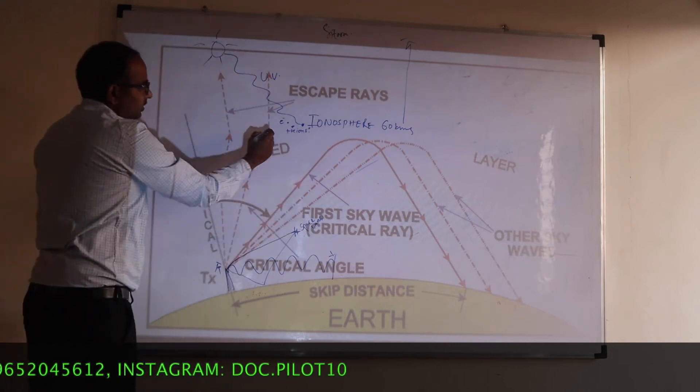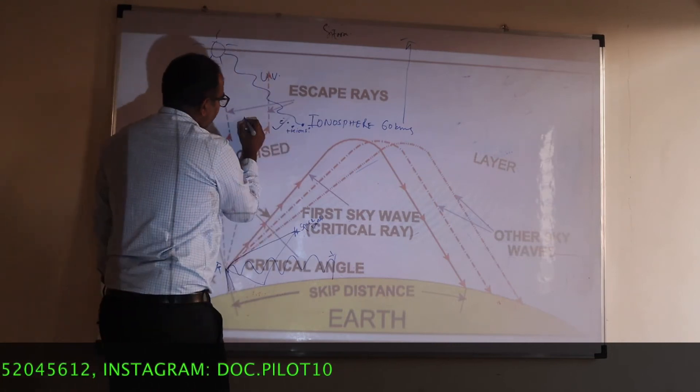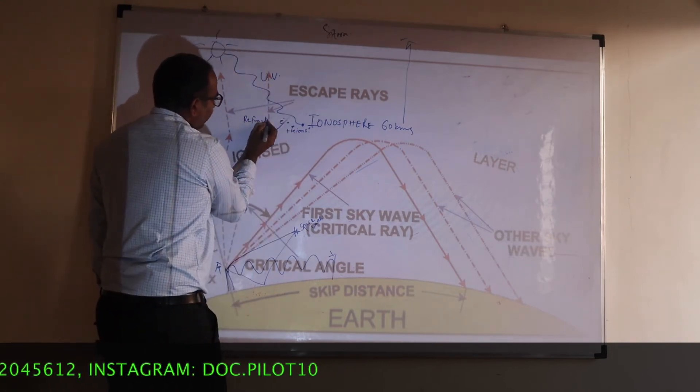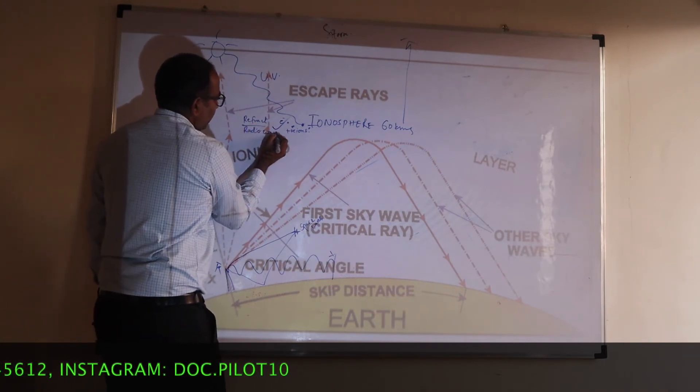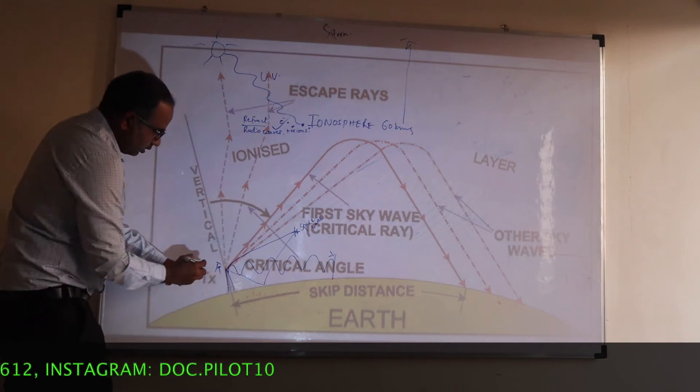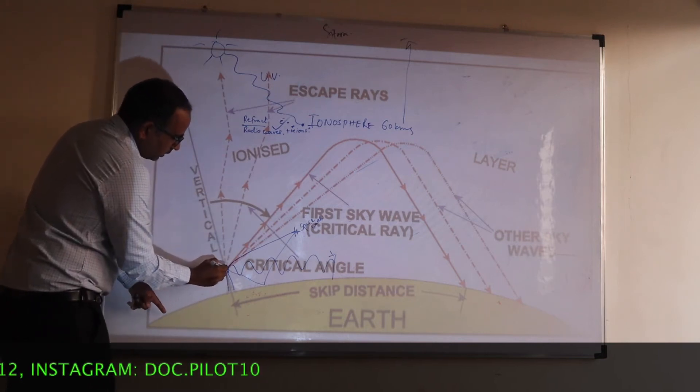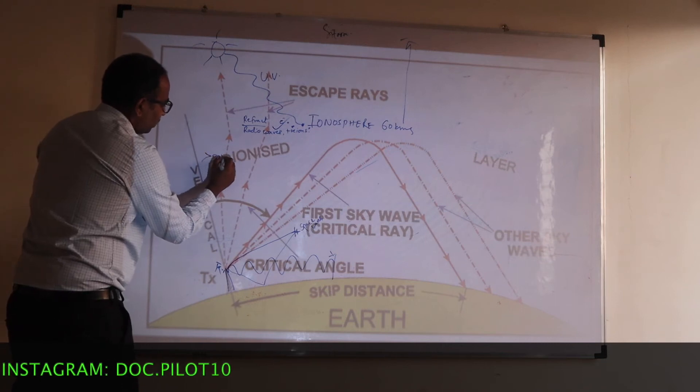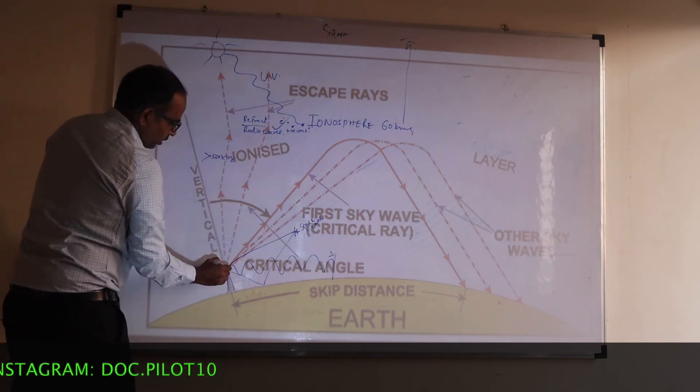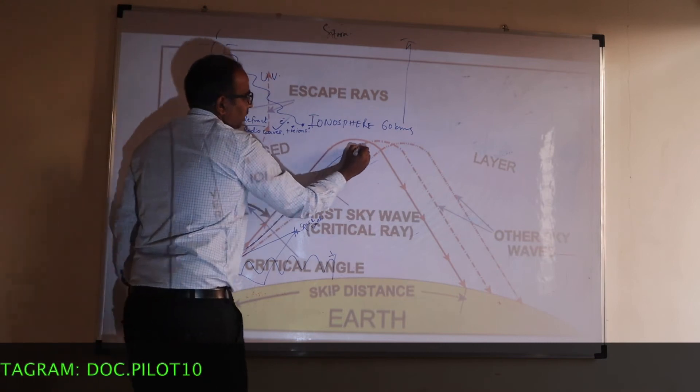The speciality of this layer is to refract radio waves, refract, not reflect, refract radio waves. Now, if you send a wave to the ionosphere of more than 500 kilohertz, at a certain angle called as critical angle, it will get refracted back to the surface of the earth at a very long distance.